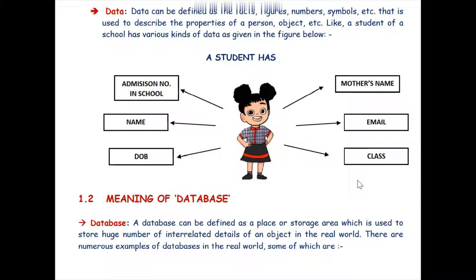Just like we see the example of a bank account — everybody has an account in a bank, so the bank allots a particular account number, name of the account holder, date of birth, father's name, mother's name, mobile number, and other various KYC documents. All these are data describing a real-world entity.